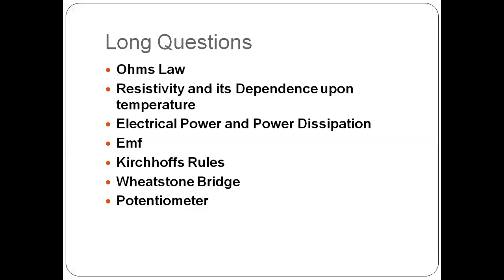Now we are going to talk about long questions. The first long question of this chapter is Ohm's Law — that current is proportional to potential difference across any conductor. This holds when the temperature is constant. If we increase the temperature, resistance will increase and Ohm's law will not hold. If Ohm's law holds, we call it an ohmic material. Non-ohmic conductors include semiconductor diodes, where we use silicon or germanium.